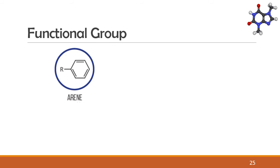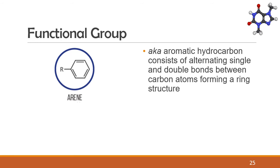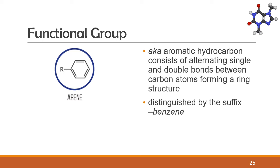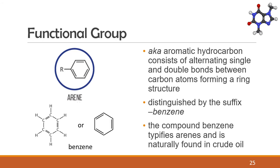Finally, we have arene, or aromatic hydrocarbon. An arene consists of alternating single and double bonds between carbon atoms forming a ring structure. Arenes are distinguished by the suffix "-benzene" in their names. The compound benzene typifies arenes and is naturally found in crude oil.